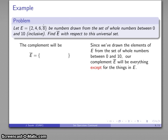What's in E? 2, 4, 6, and 8. What's left from this set of whole numbers between 0 and 10? It's going to be the remaining numbers: 0, 1, 3, 5, 7, 9, and 10.